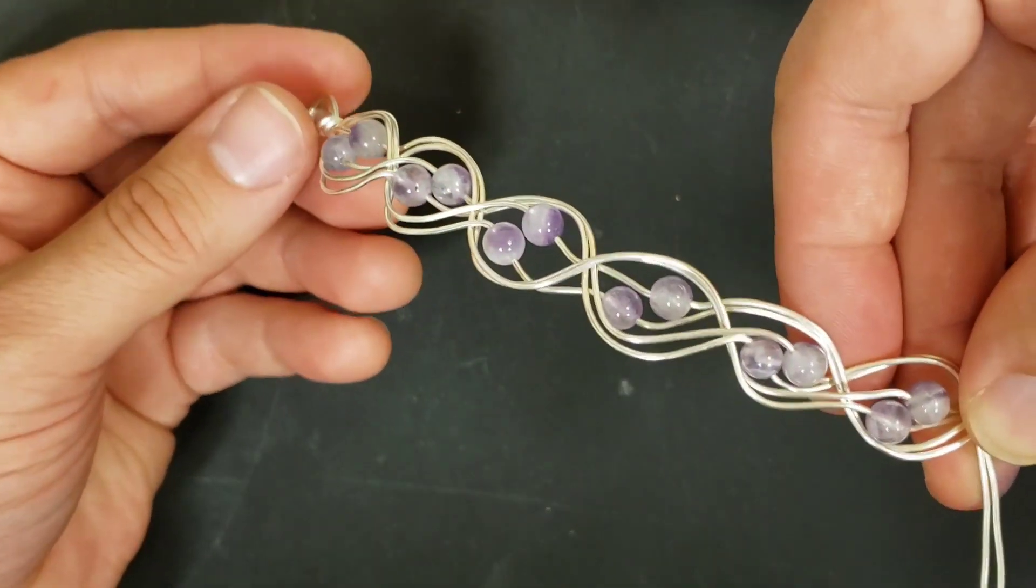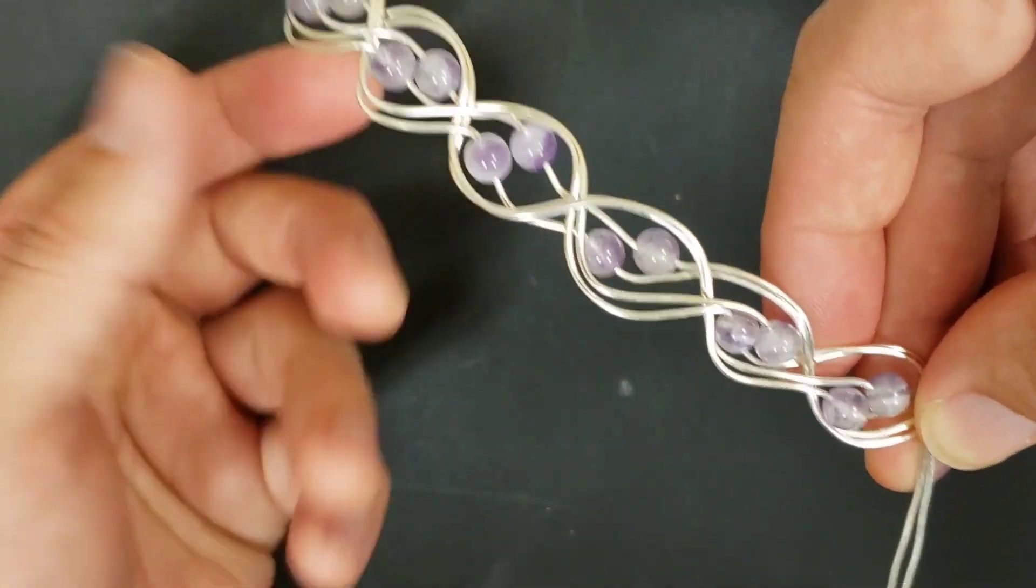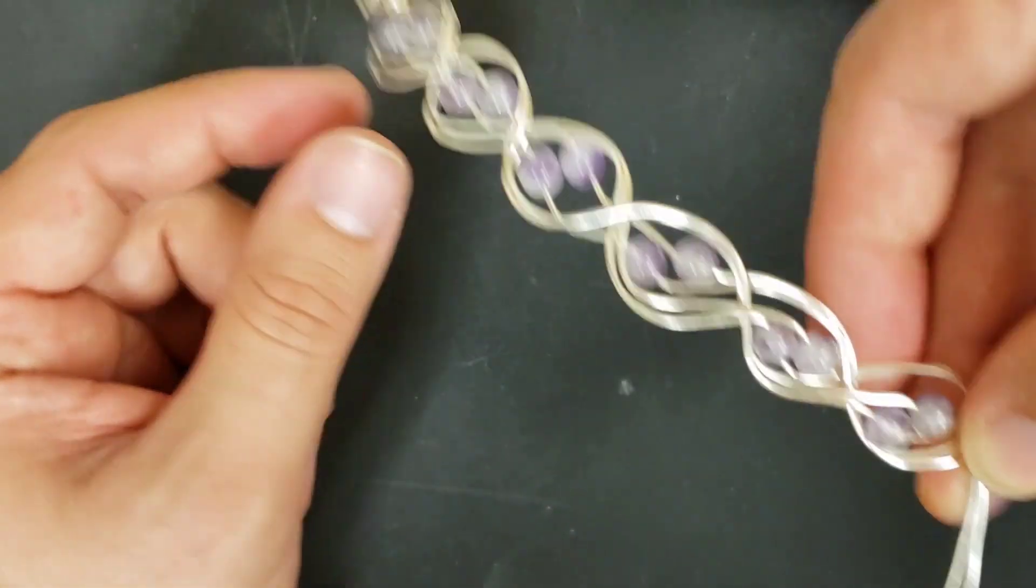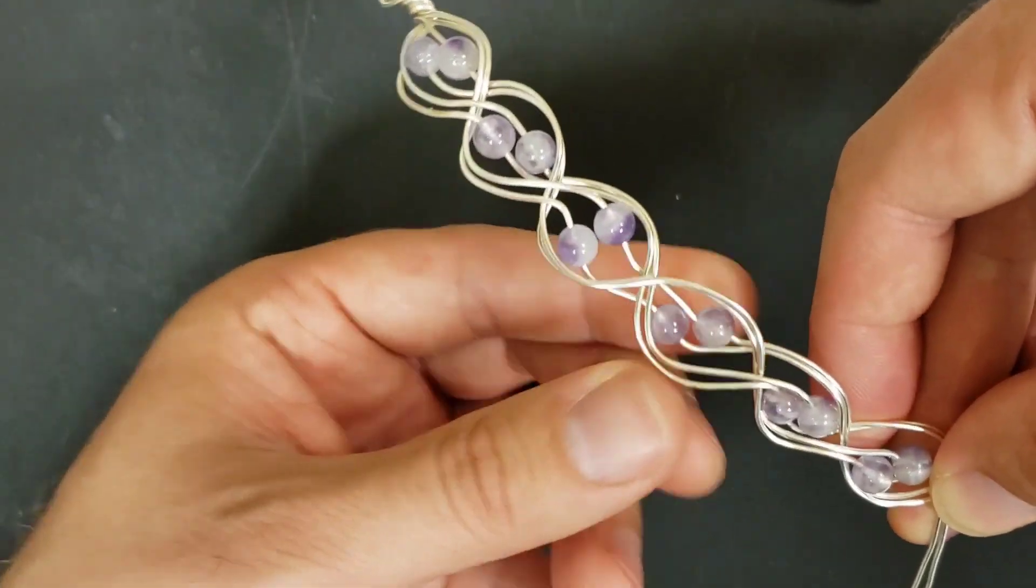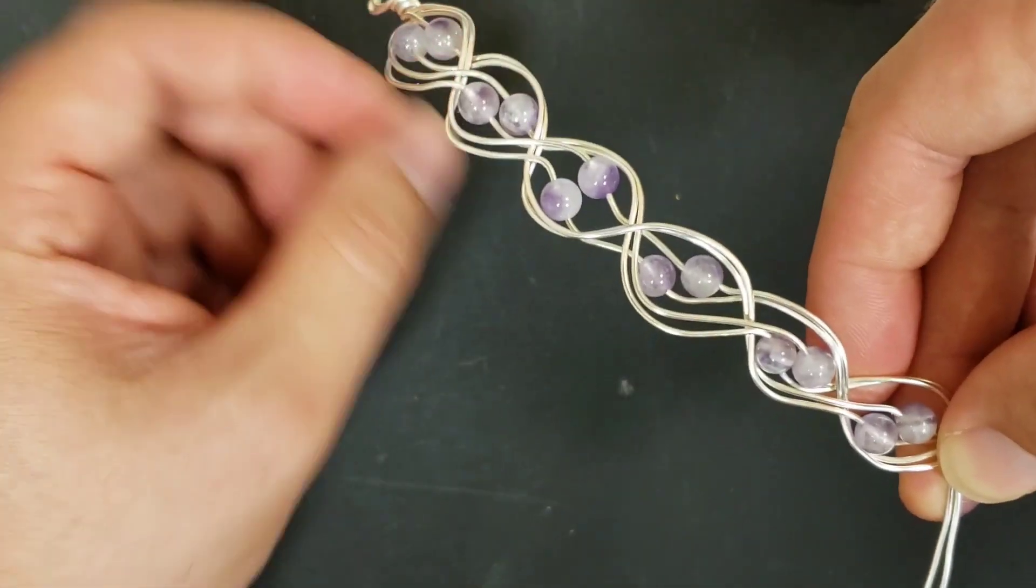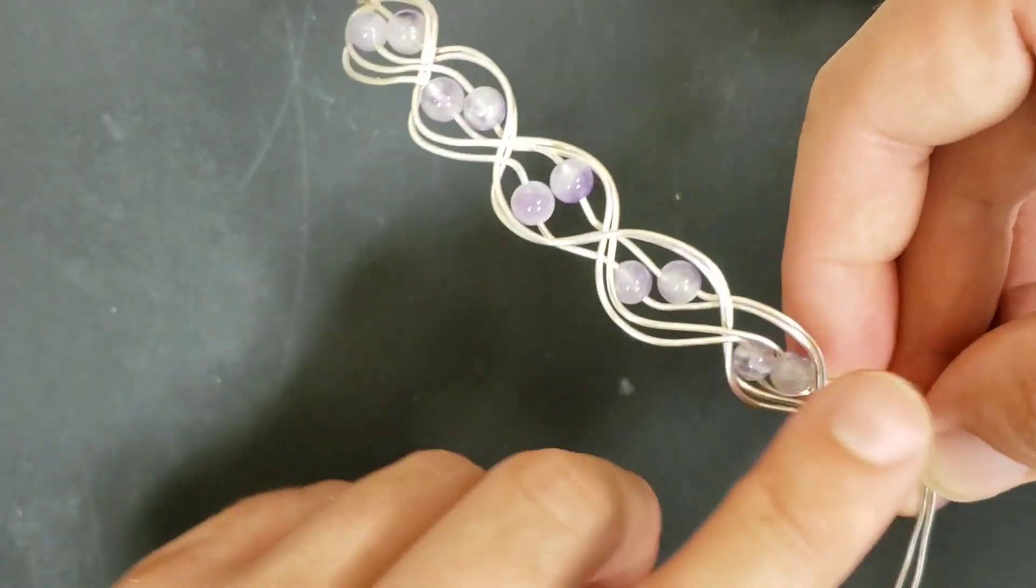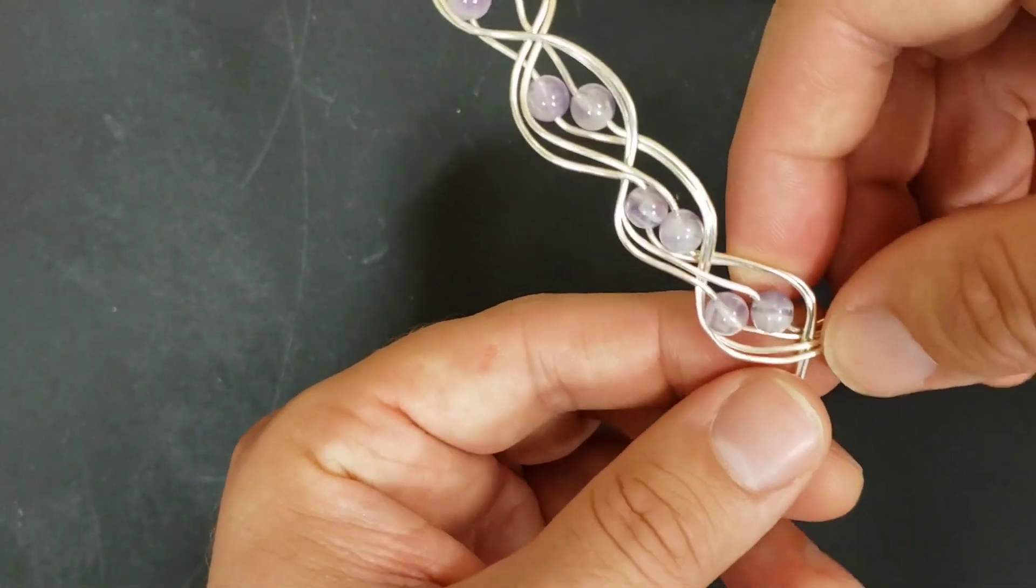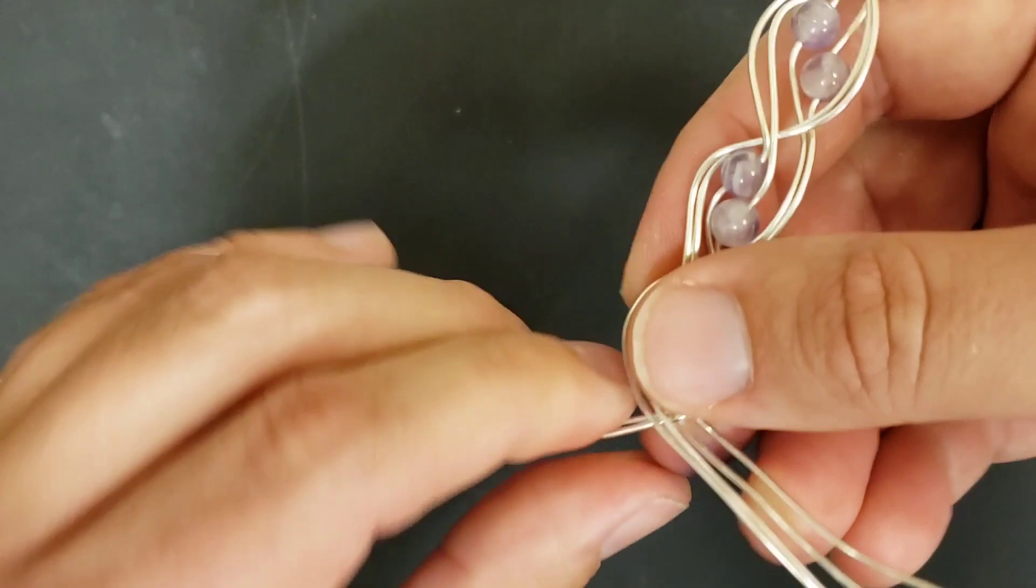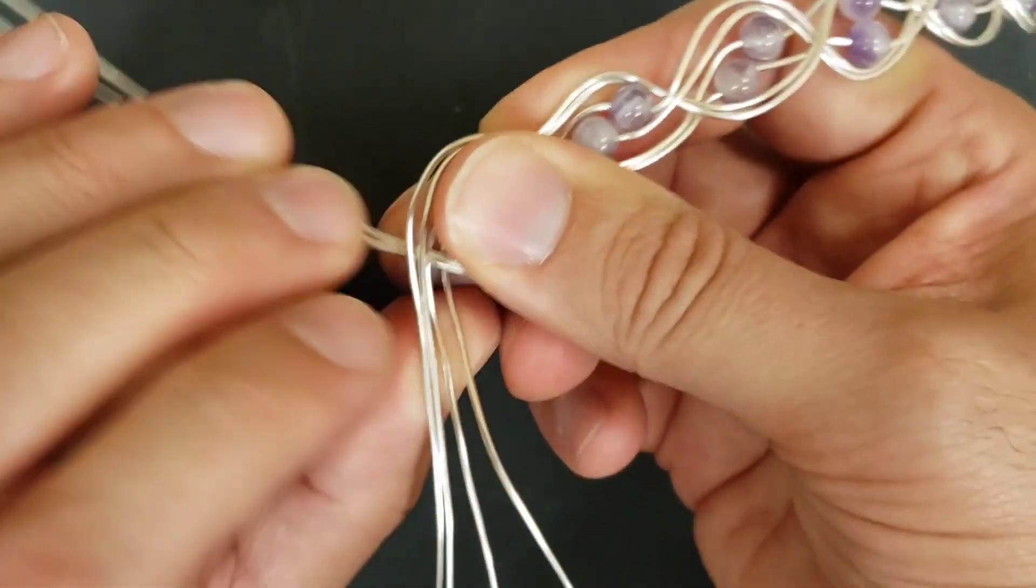When you think you've gotten enough to go around the wrist mostly, and it doesn't have to be a big wrist, it could be enough to go around a small wrist because we're going to add a little bit of links at the end to make it adjustable. So you want to aim to make this a small wrist cuff. But I found six sets of two seem to be a good place to end it.